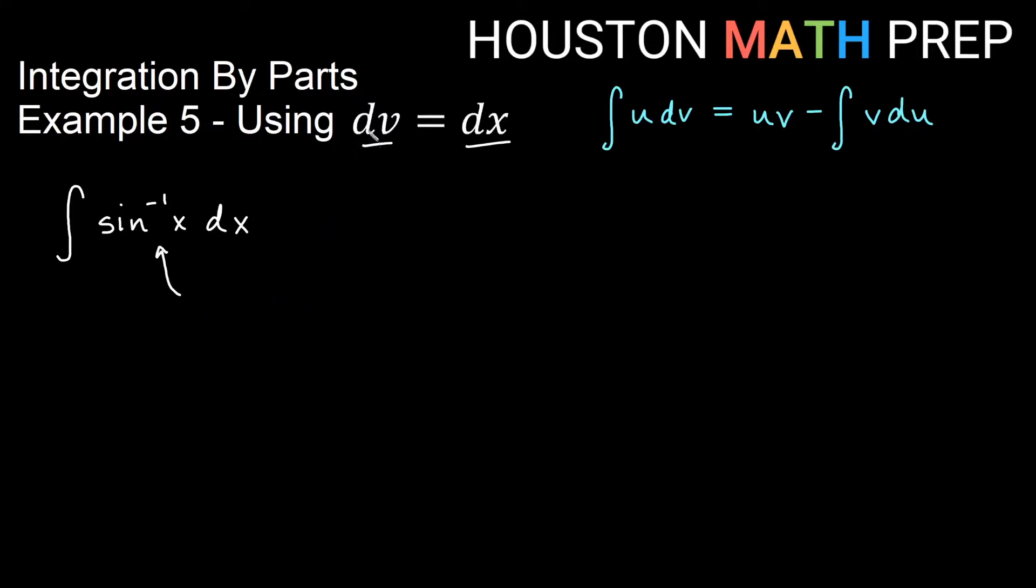The idea is really just to choose dv to be dx. We do that when the thing that we're trying to integrate by itself, perhaps, we don't really know its antiderivative, but maybe we easily know its derivative.